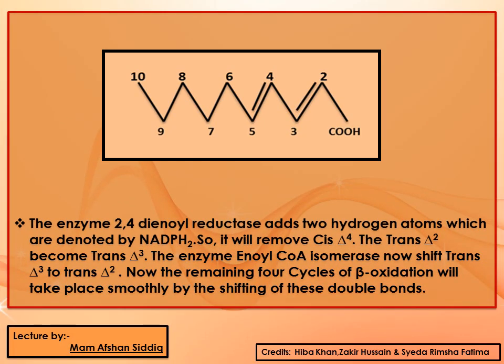The enzyme 2,4-dienoyl reductase adds two hydrogen atoms donated by NADPH, removing the cis-delta-4 while the trans-delta-2 becomes trans-delta-3. The enoyl-CoA isomerase then shifts trans-delta-3 to trans-delta-2. The remaining four cycles of beta oxidation then take place smoothly by the shifting of these double bonds.